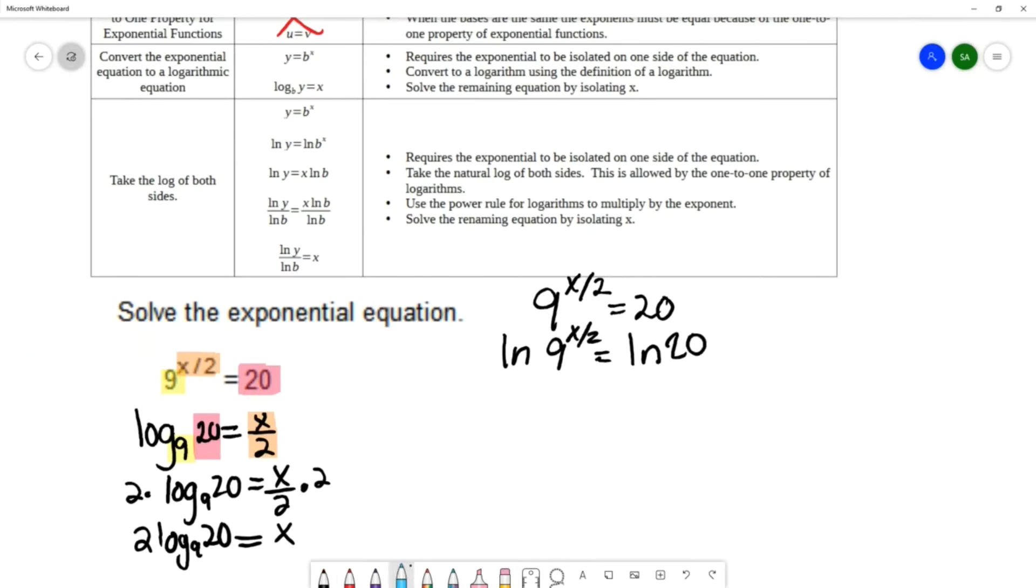We're going to use the power rule for logarithms, which allows us to move that power into the coefficient. So that's x over 2 natural log of 9 equals natural log of 20.